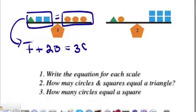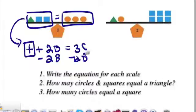Now, I want you to solve for t right away. How would you do that? You'd minus 2b on both sides. And you would get t, every time you see a triangle, it's equal to three circles minus 2b. Now, why did I do that? I kind of jumped into this one.